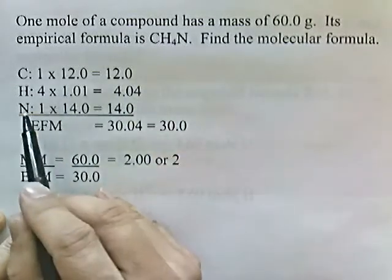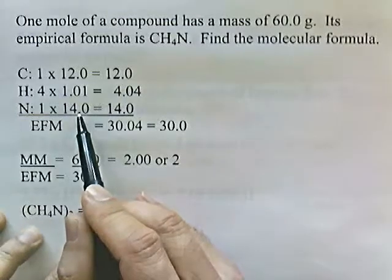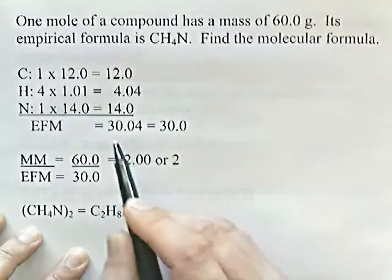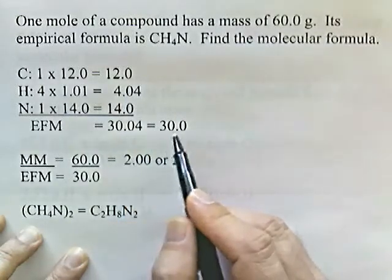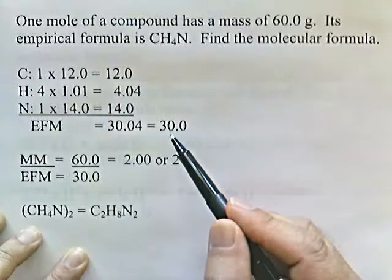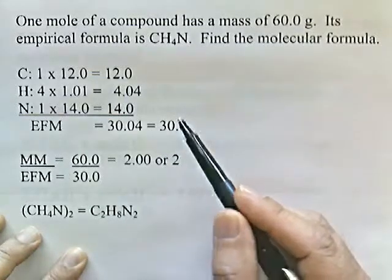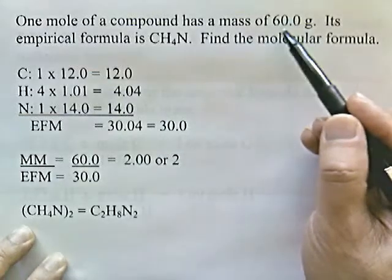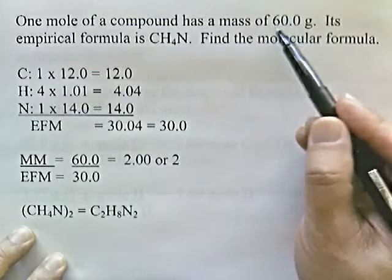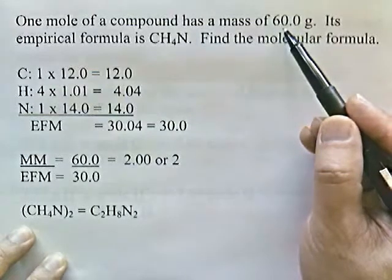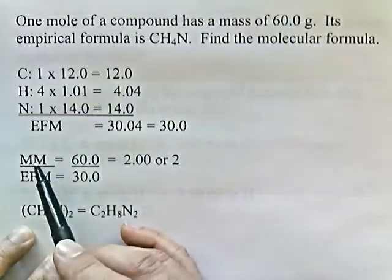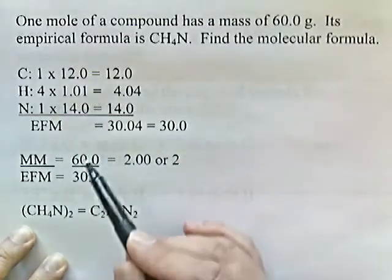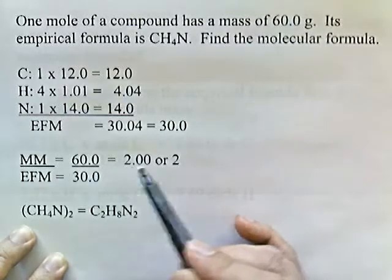One nitrogen from the periodic chart is 14 grams. Adding up the mass based on the empirical formula gives 30.04, rounded to 30. This is the empirical formula mass. The problem says one mole of the compound is 60 grams — this is the molecular mass. So we take the molecular mass (MM) and divide by the empirical formula mass: 60 divided by 30 gives 2.00.